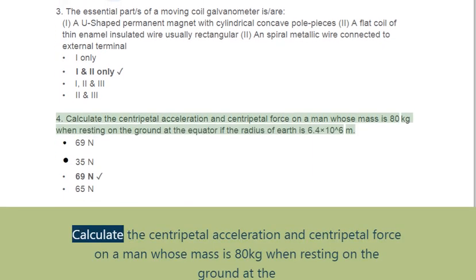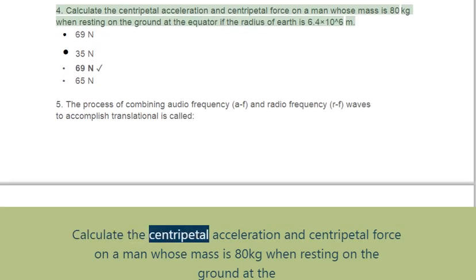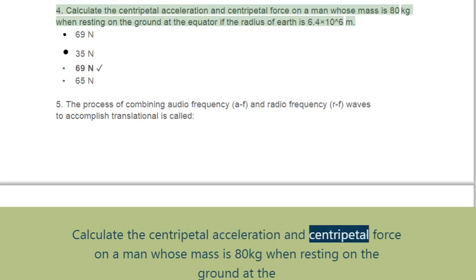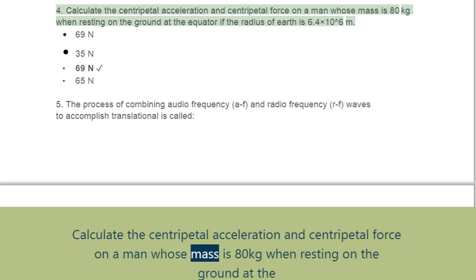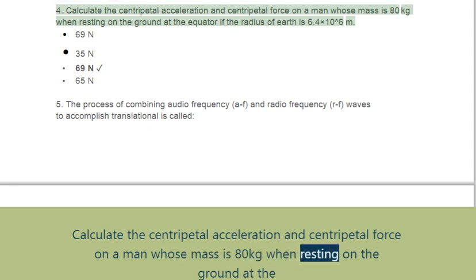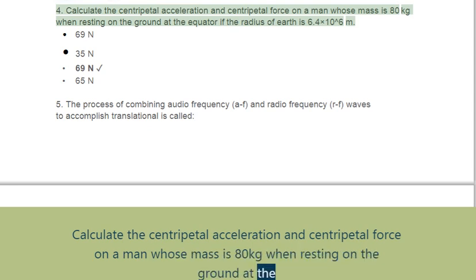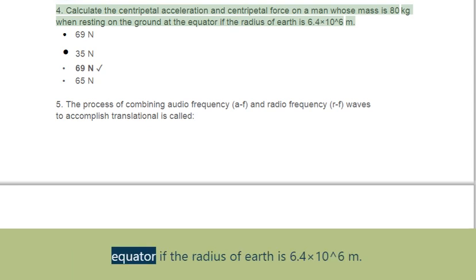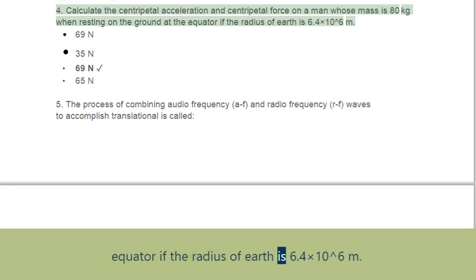Question 4: Calculate the centripetal acceleration and centripetal force on a man whose mass is 80 kg when resting on the ground at the equator, if the radius of Earth is 6.4×10⁶ meters.